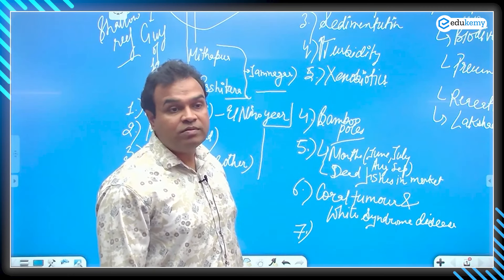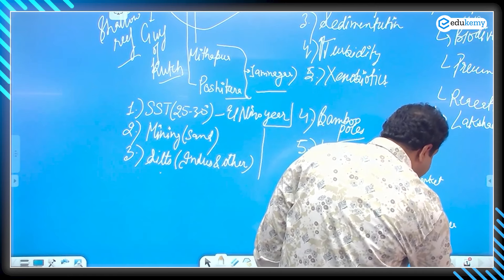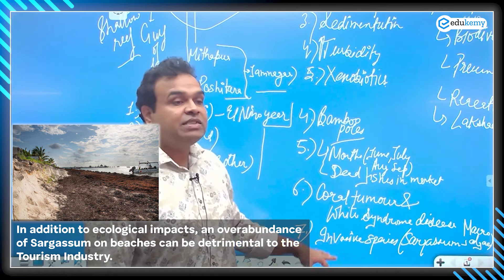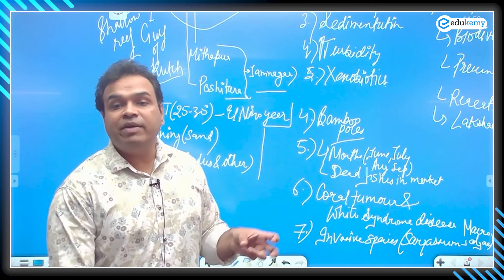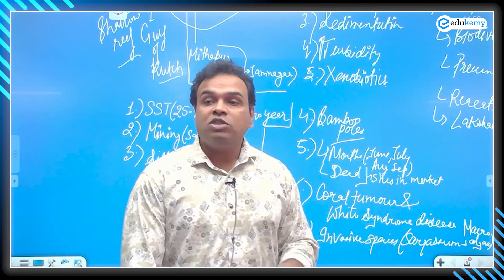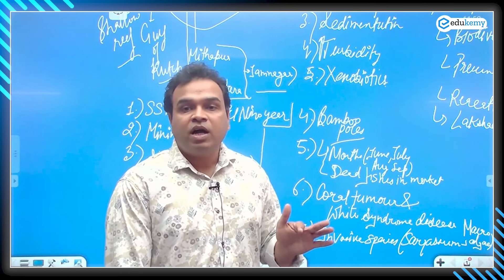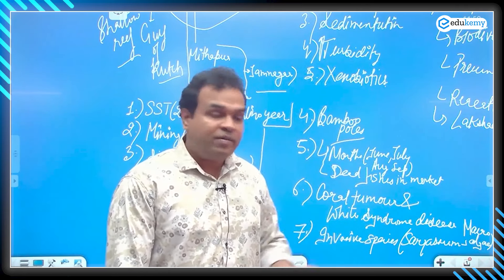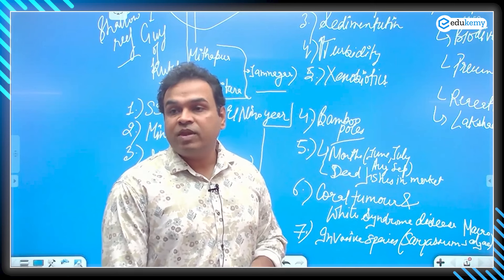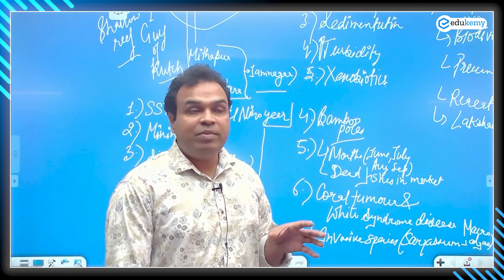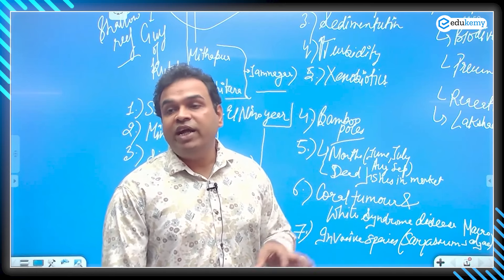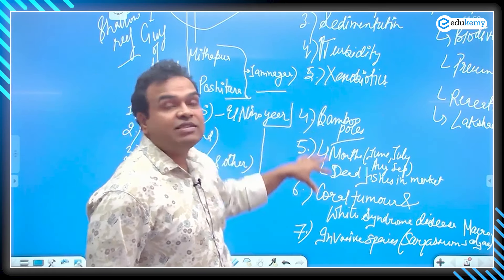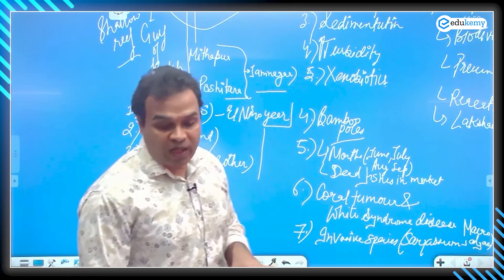Seventh point, invasive species that is sargassum. There is a competition started between coral reefs and this sargassum because whenever any coral reef is under stress, they are under stress, they have already been suffering, they are under bleaching. So invasive species started invading into their territory and this is sargassum which is posing a tough competition to coral reefs. So yeah, the factors are in the way it led to the coral bleaching of government.